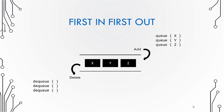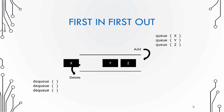Now let's dequeue all three numbers one by one. Remember that x was the first element to go into the queue, so it will be the first one to go out. Because we always delete elements from the front and add elements to the back, the first one to go in is naturally the first one to go out.